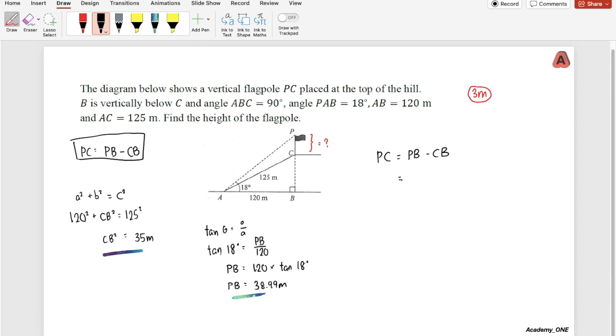Let's put in the values. PB is 38.99 meters minus CB, which is 35 meters. So from here, I get the length of the pole PC as 3.99 meters.